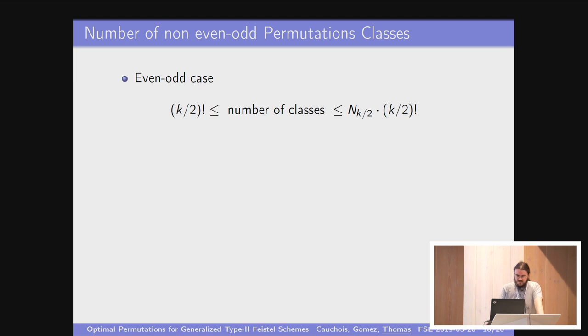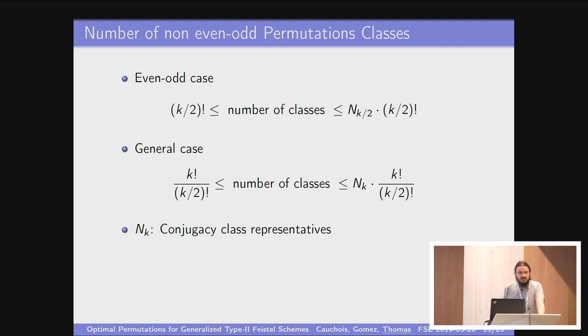And for the number of classes, in the even-odd case, you had this inequality. For the general case, you have something like this. The most interesting is the upper bound. NK is the number of conjugacy classes. The second is the number of representatives of the right coset of SK modulo the K blocks permutation modulo the permutation of pairs, where you swap permutations by super blocks. So we can again do exhaustive search. We did this. And surprisingly, as was noticed in the paper, non-even-odd permutations are generally worse than even-odd permutations.